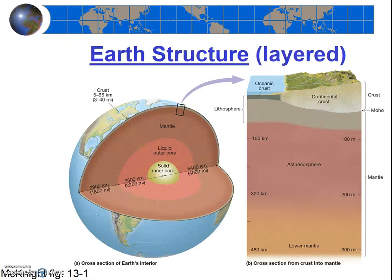There are two ways that we can discuss the layered structure of the earth. We can identify the earth's layers based on the composition of the layers—that is, what the rocks are made of—or we can identify the layers based on the physical properties of the layers, how they act.